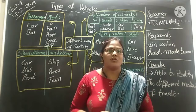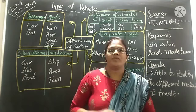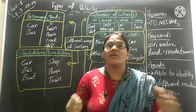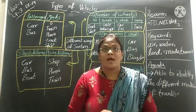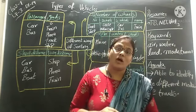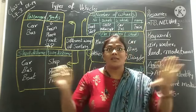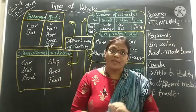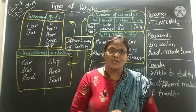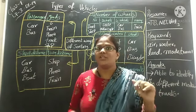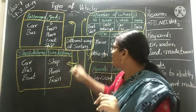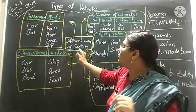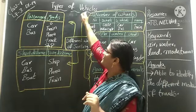Air, water, and land. Yes or no, children? Now, how we can differentiate these vehicles? How we can sort out all the vehicles? What are the differences and what are the similarities? Can we discuss today? The main idea is different ways of sorting out vehicles.